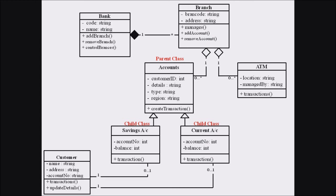This is how we represent a class diagram for a particular scenario. In this example, we discussed the class diagram for banking transactions with seven classes: Bank, Branch, Account, ATM, Savings Account, Current Account, and Customer, with relationships including inheritance, aggregation, and composition, along with the associated multiplicity factors.